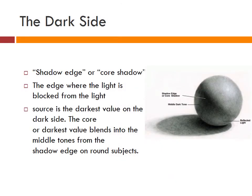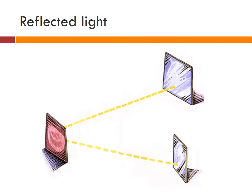Dark side can also be called shadow edge or core shadow. The edge where light is blocked is the dark side. Reflected light occurs when light bounces off an object. If the surface is smooth and shiny like glass, water, or polished metal, the light will reflect at the same angle as it hits the surface.